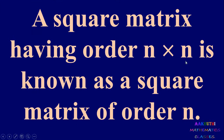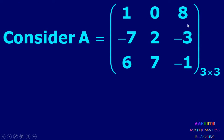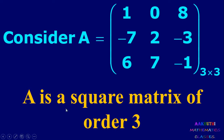A square matrix having order n by n is known as a square matrix of order n. So n by n matrix is called a square matrix of order n. For example, A equal to [1, 0, 8; -7, 2, -3; 6, 7, -1] is a square matrix of order 3, since it has 3 rows and 3 columns.